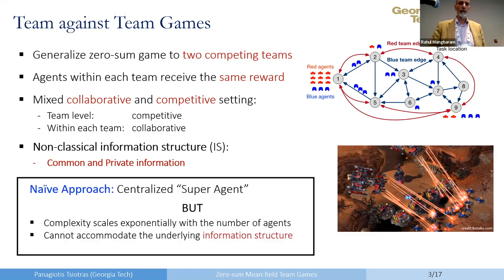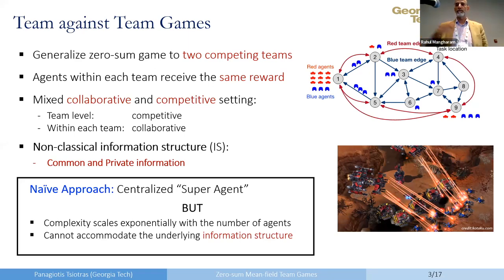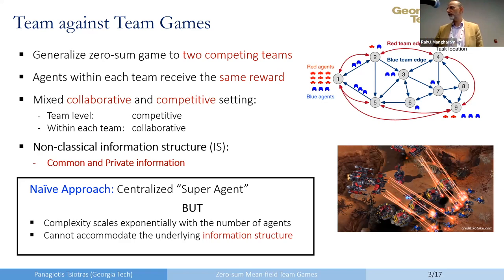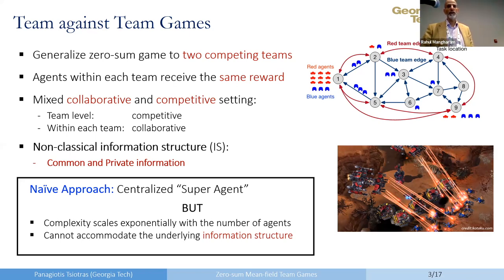One may assume a very generalized approach — a super-agent where all agents are collected into one big vector. But two problems arise: first, complexity increases exponentially; second, you lose the information structure, because putting everybody in the same boat means every agent knows everything else, which is not necessarily true. I want to capture the non-classical information structure where you have both common and private information.